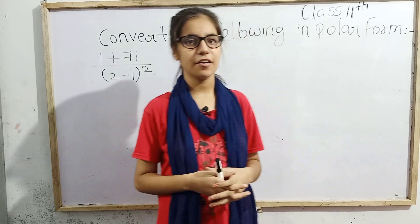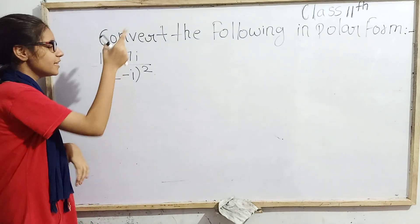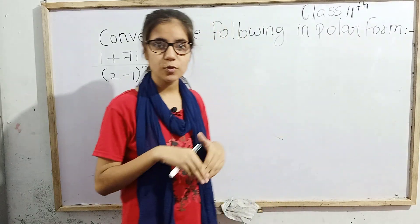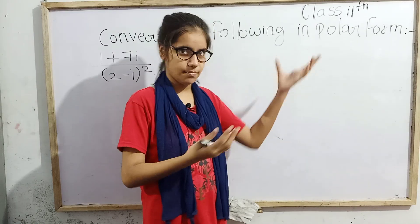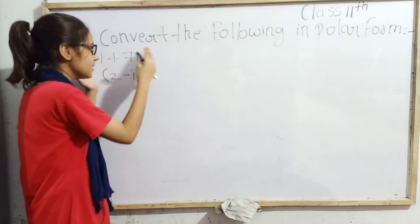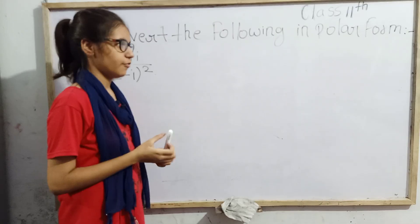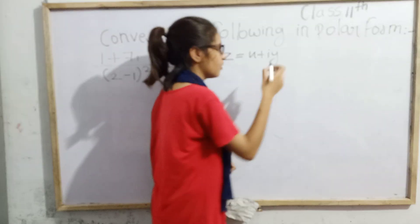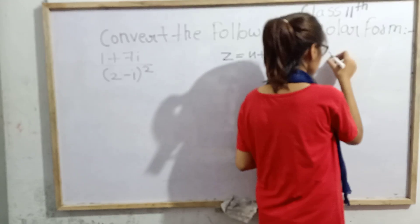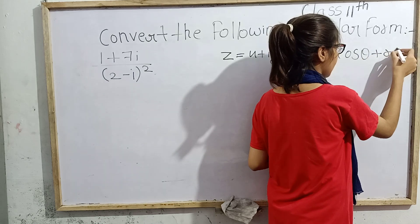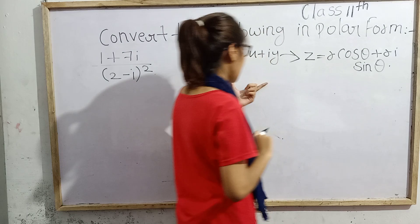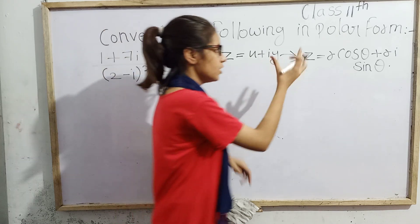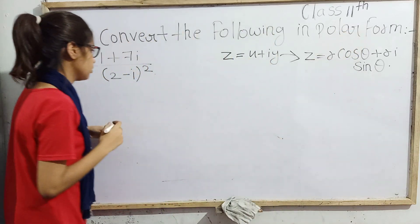Hello everyone, today I am back with a special topic from Class 11 Mathematics. The question is: convert the following number into polar form. Something interesting here is that only a number is given, not a complex number. We know that a complex number is z = x + iy, and the polar form formula is z = r cosθ + ri sinθ. First, we will convert the given number into complex number form, and then we will write it in polar form.